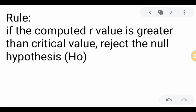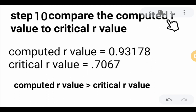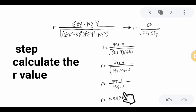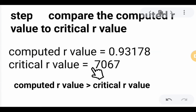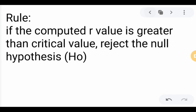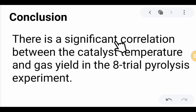Step 10 is to compare the computed r value to the critical r value. The rule is: if the computed r is greater than the critical value, reject the null hypothesis. The computed r = 0.93178 is greater than the critical value of 0.7067, so we reject the null hypothesis. Therefore, there is a significant correlation between the catalyst temperature and gas yield in the 8-trial pyrolysis experiment.